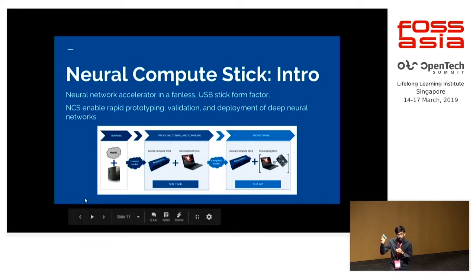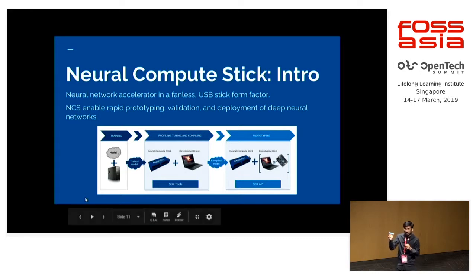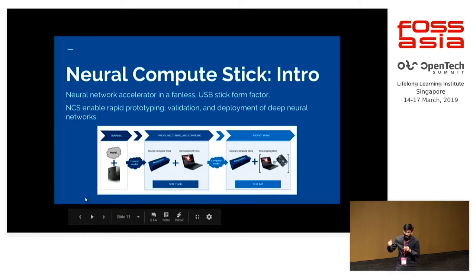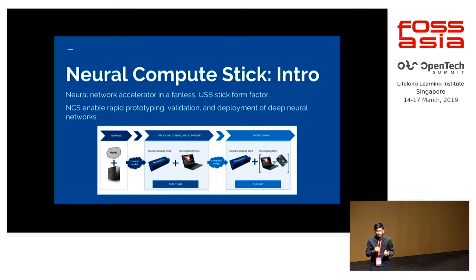For this device — the Neural Compute Stick — it is just $99. You offload your model here and all the processing happens here. Even with an Atom, Celeron, or a Raspberry Pi, you can infer your deep learning models. Something like a Celeron processor and a Raspberry Pi is now able to infer your deep learning model — you don't actually need those expensive GPU solutions or the limitations of the cloud.